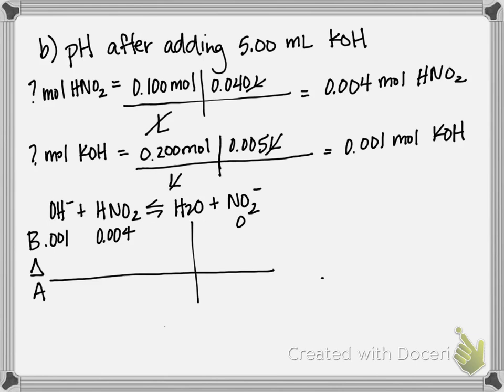So now, for the change part, we look at the two amounts we have, figure out which is the smaller, and that's what we subtract or add to all of our things that are changing. So remember, reactants are going to be consumed, so we're subtracting, and products are being made, so we're adding. So my smallest mole amount is the 0.001, so it's going to be minus 0.001, minus 0.001, and then on our product side, plus 0.001. So that leaves me with no hydroxide, 0.003 moles of acid, and 0.001 moles of its conjugate base.